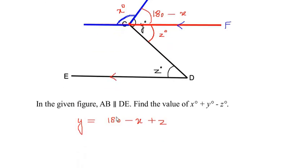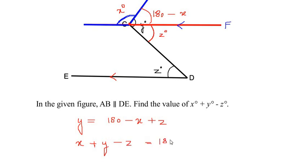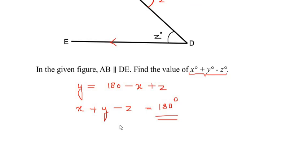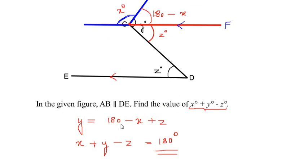Now rearranging and taking the letter terms to one side of the equals sign: −x comes over and becomes positive, giving us +y°, and +z moves to the other side and becomes −z. This gives us x° + y° − z° = 180°.